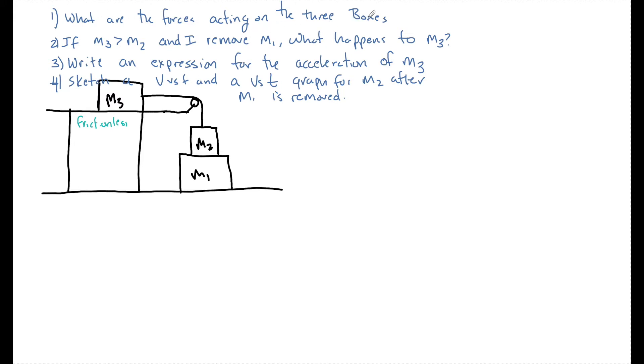I'm going to say what are the forces acting on the three boxes? So essentially draw a free body diagram for each of the three boxes, and if M3 is greater than M2, and I remove M1 from the system without moving anything or disrupting M2, what's going to happen to M3?